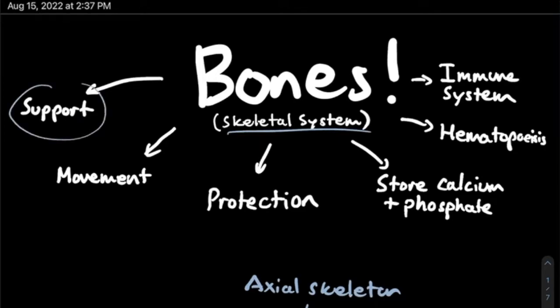The first function is support. Obviously, if we didn't have our skeletal system, we would be more of a blob on the ground than an actual upright person. Our skeletal system has to provide some sort of framework for the rest of our organs and muscles to be attached to. That's pretty intuitive.